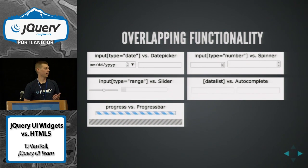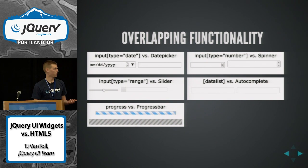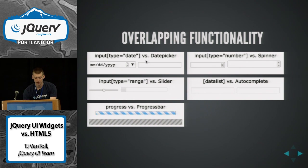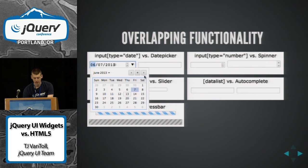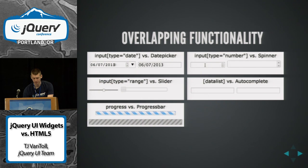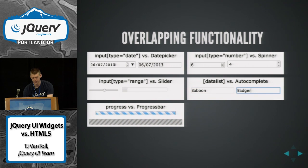What I mean by that is, as browsers implement more and more of these HTML5 features, we're really at a point where we have two different widgets that perform basically the same function. For example, this is Chrome's implementation of input type date, and here's a UI date picker. Pretty similar. Input type number versus spinner, range versus slider, and data list versus autocomplete.